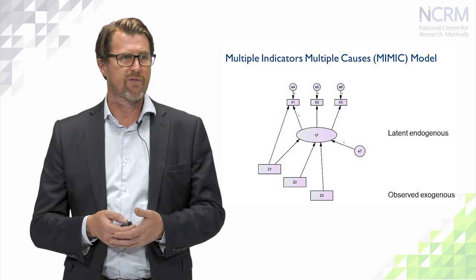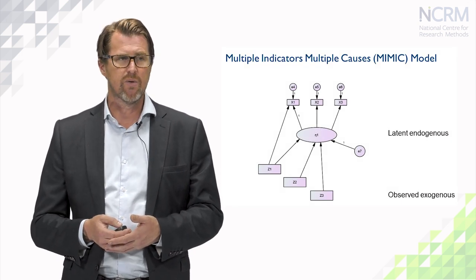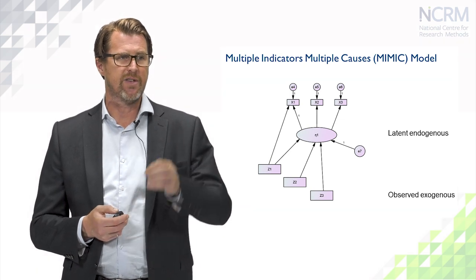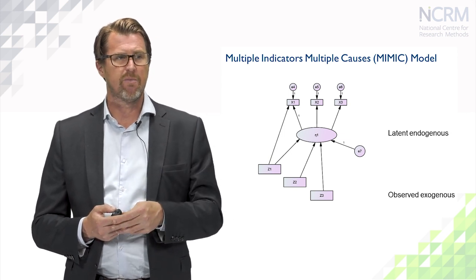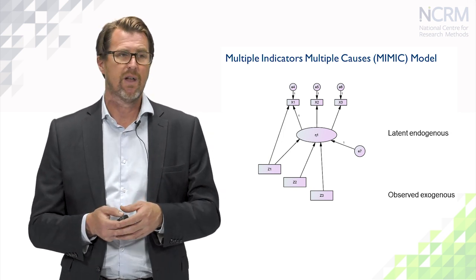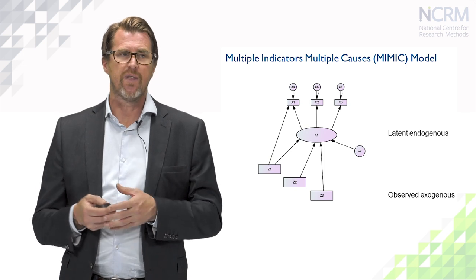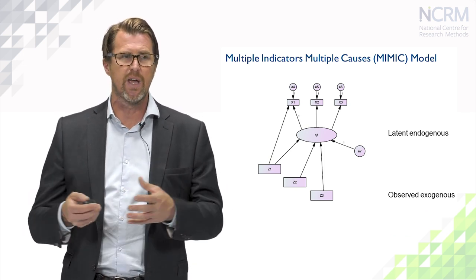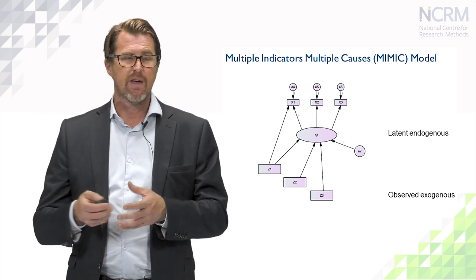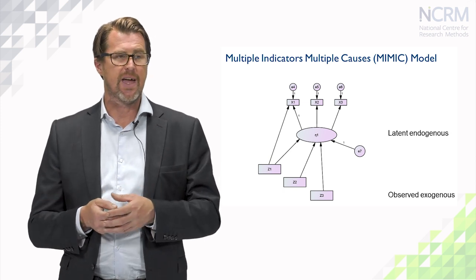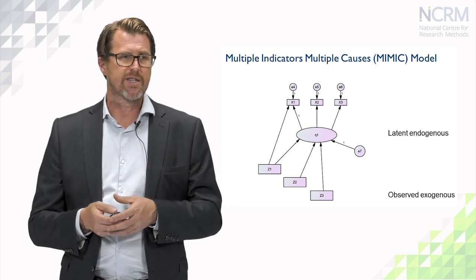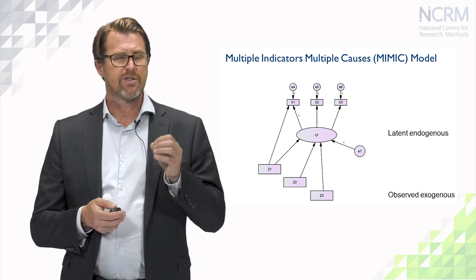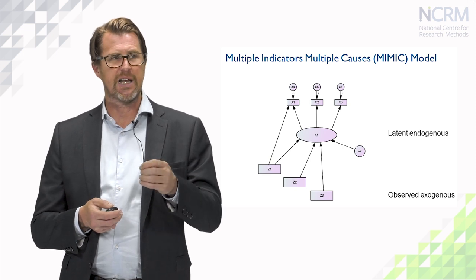Another kind of model that we can fit as a structural equation model is what's referred to as a multiple indicators, multiple causes model — or MIMIC model. There are a couple of things to note about this. We have one latent endogenous variable, eta1, but the predictor variables in this model are just observed variables — they're not latent. Something to note is that a structural equation model does not have to comprise solely of latent variables; it can be a mix of both directly observed and latent variables.